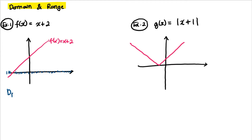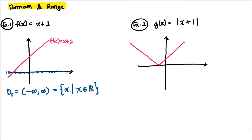Therefore the domain of f, written D(f), is from negative infinity to infinity — any real number. You can write this as: the set of all x such that x is an element of the real numbers. Either notation is acceptable.